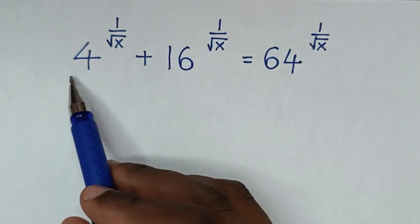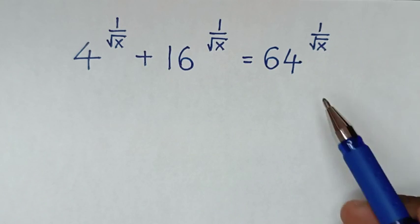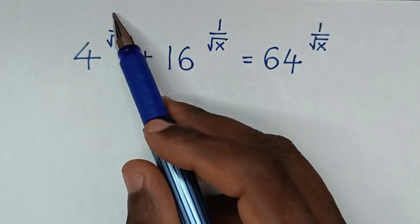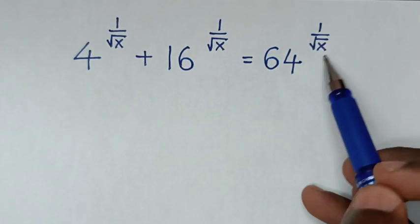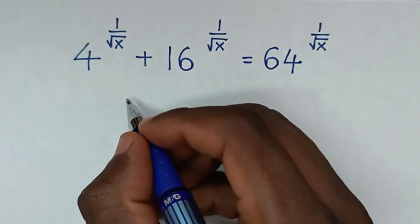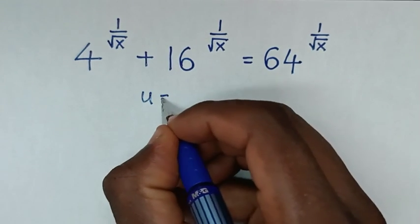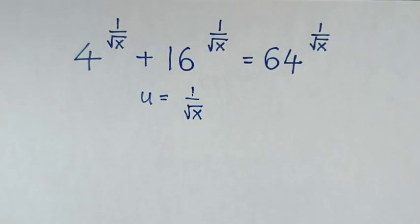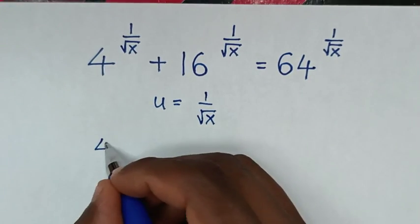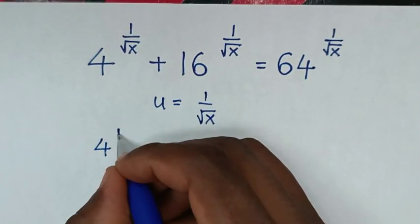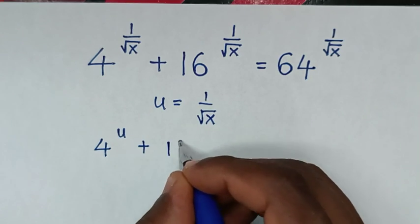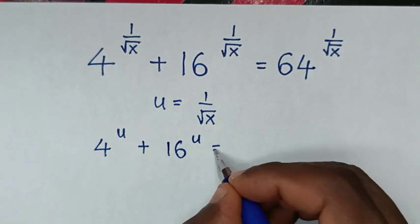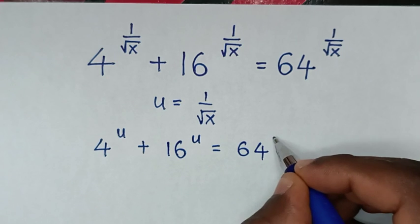To find the value of x from this equation. The powers, which is 1 over square root of x, are common. So we'll start by letting u equal to 1 over square root of x. Then it becomes 4 to the power of u plus 16 to the power of u equals 64 to the power of u.